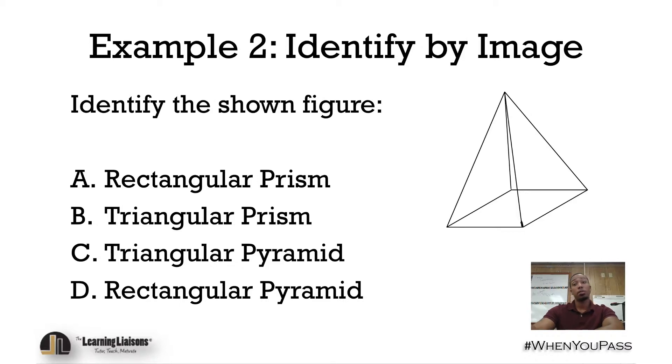So identify the shown figure. I'll go ahead, take a quick second, pause the video, and then we'll go ahead and get to it. So we want to identify the shown figure here. Well, when we think about it, it's 3D, it's a 3D object, so no matter what we need to make sure we look for 3D objects here. All of these are 3D, so we're good. They're all prisms or pyramids.